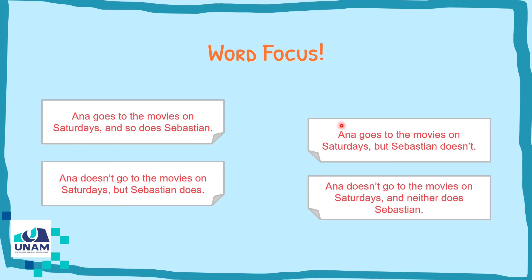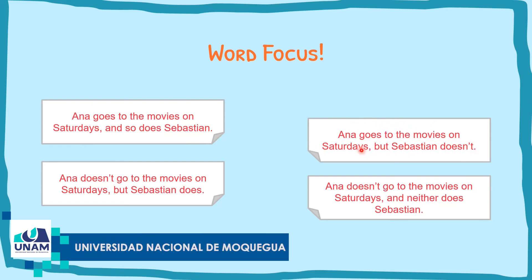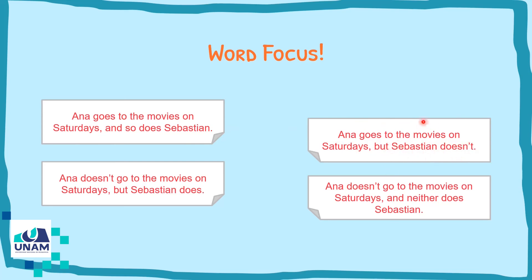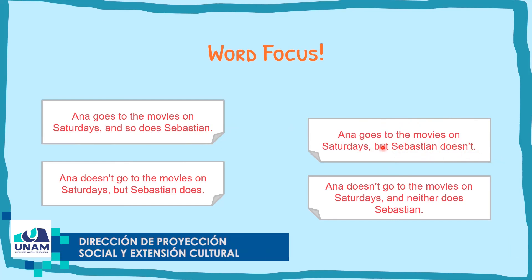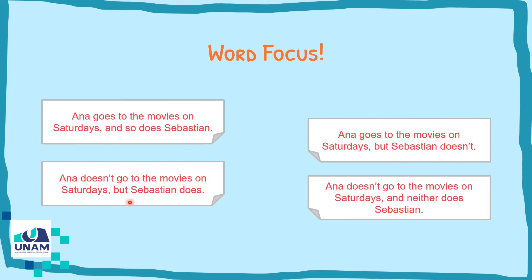In the negative: 'Anna goes to the movies on Saturday, but Sebastian doesn't.' Anna goes but Sebastian does not — instead of repeating everything, we reduce it to 'doesn't.' Then: 'Anna doesn't go to the movies on Saturday, but Sebastian does.' It's important to know we use 'but' when the sentences are different — one affirmative and one negative.